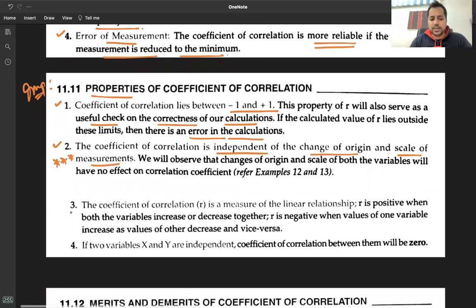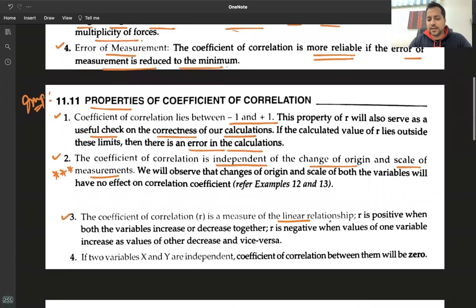The coefficient of correlation is a measure of linear relationship. R is positive when both variables increase or decrease together—they move in the same direction. R is negative when they move in opposite directions: one increases, the other decreases. So there exists a linear relationship; it may be positive or negative.